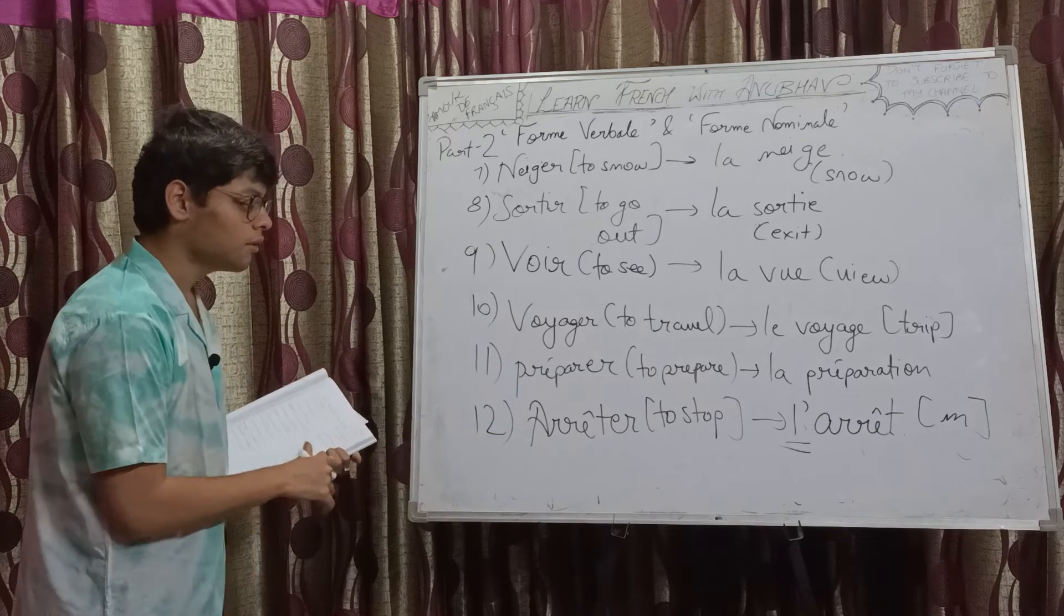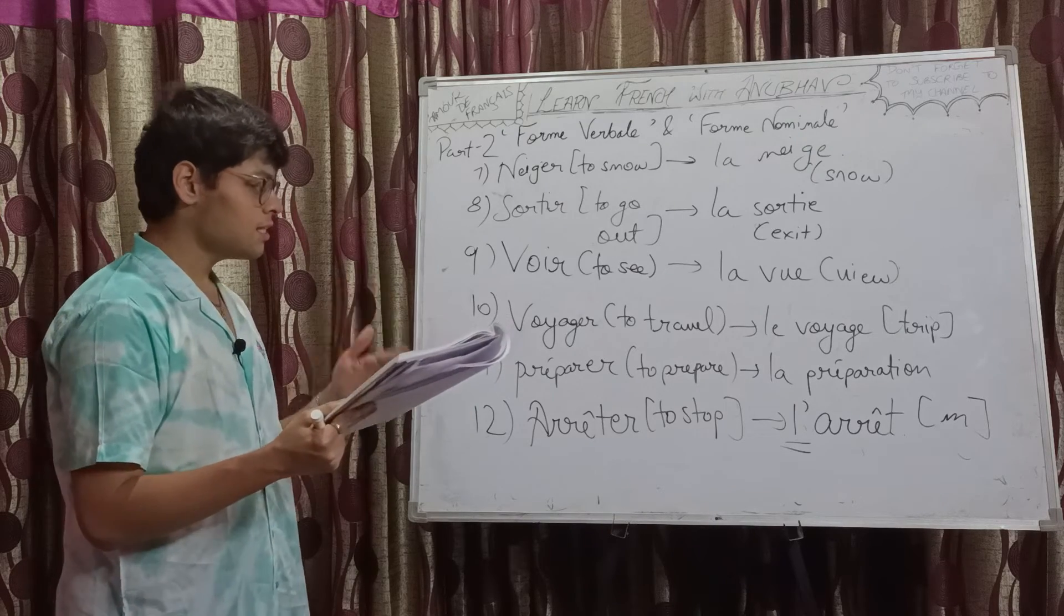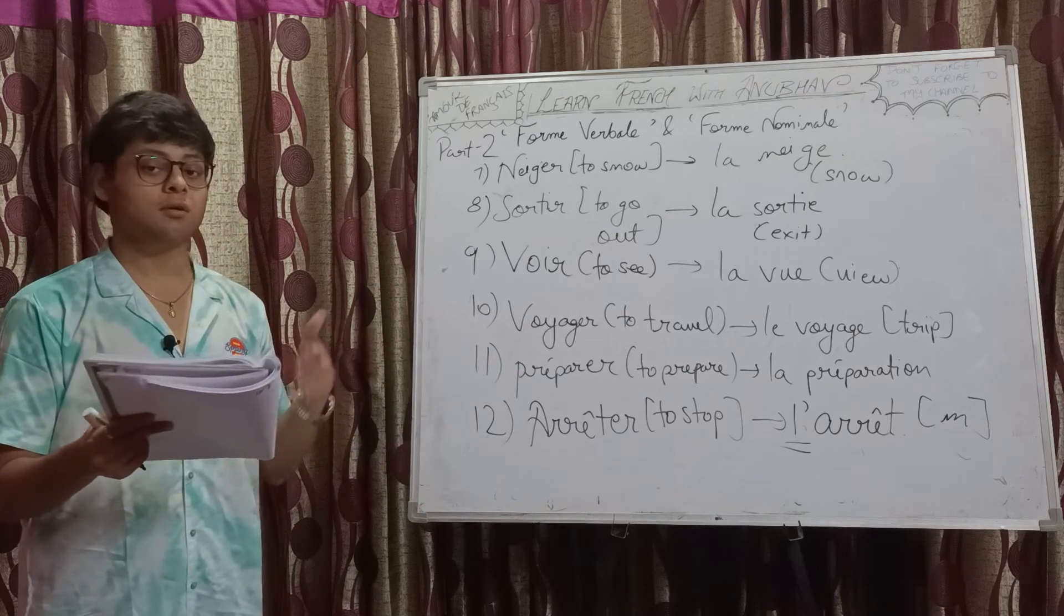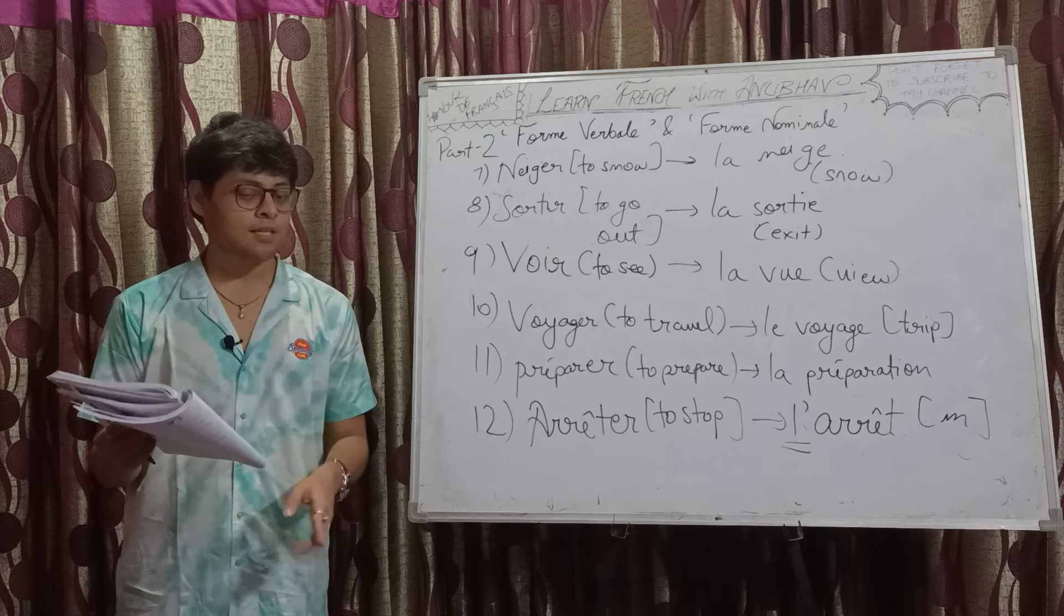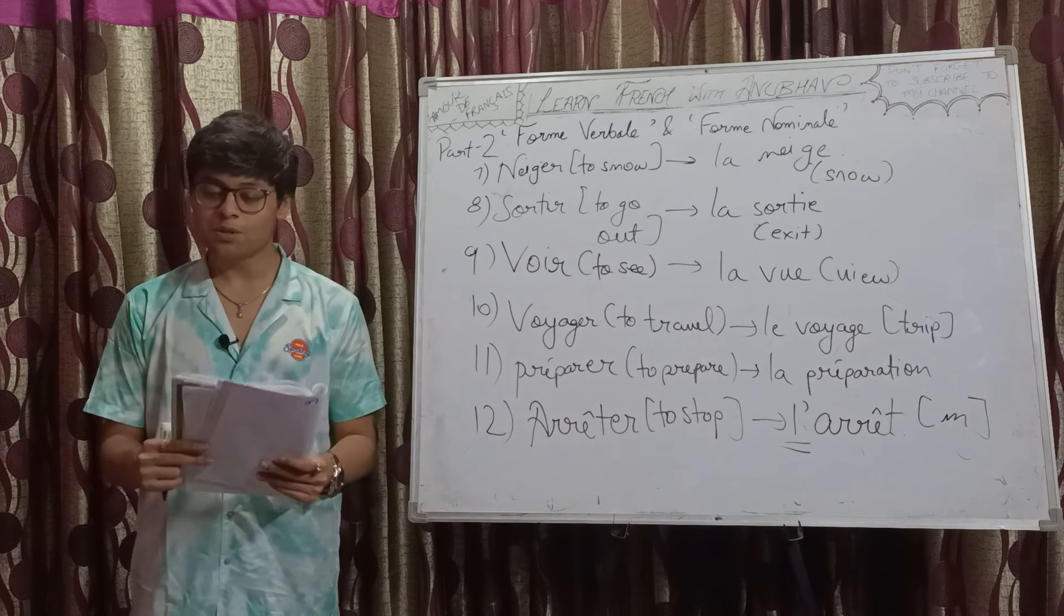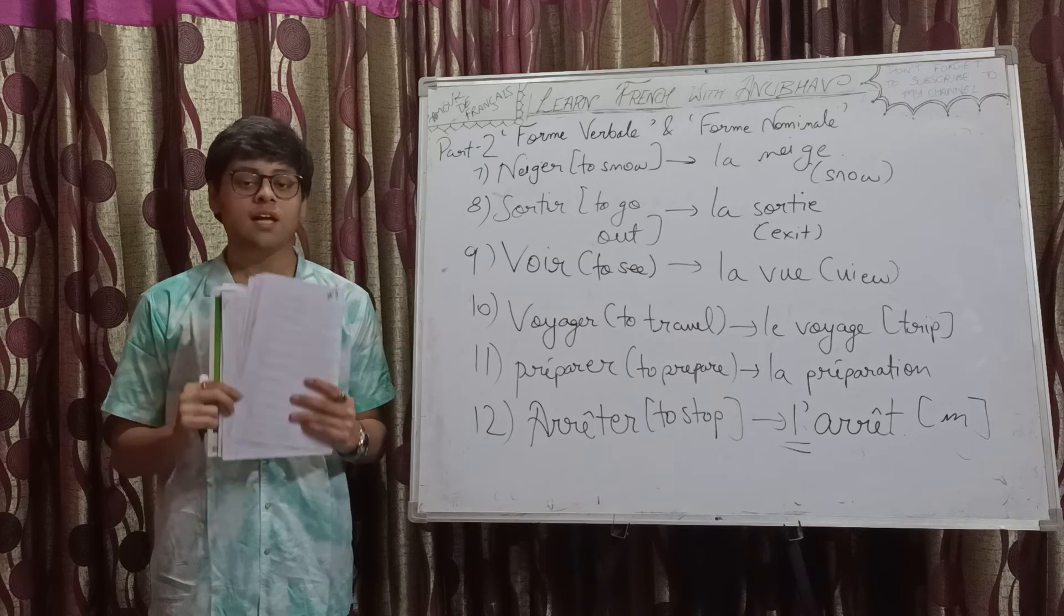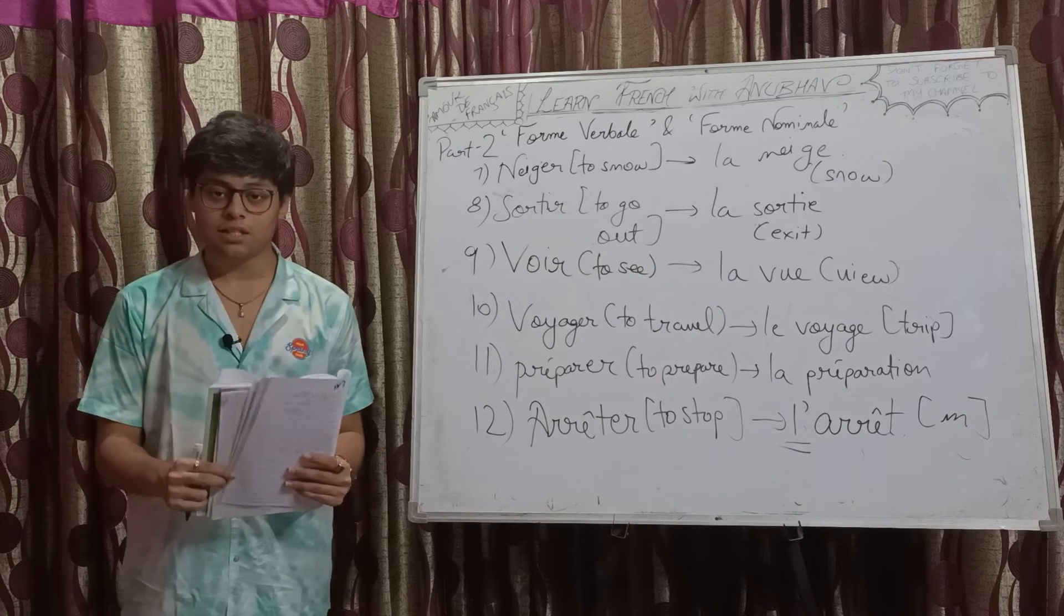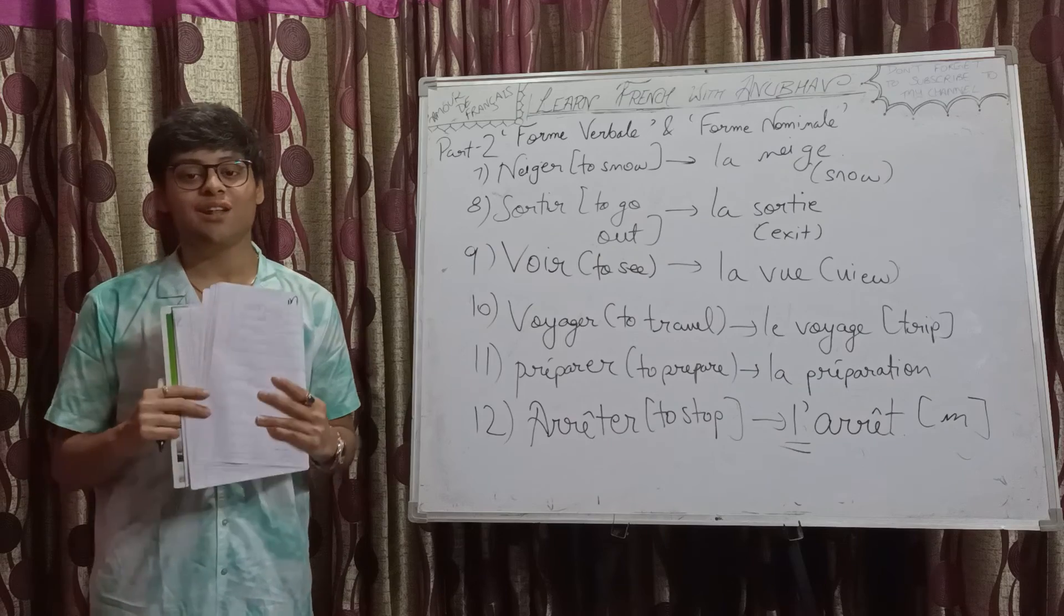With this, we have discussed another 12 verb forms and their corresponding noun forms. If you want Part 3, do let me know in the comments. That's all for today. If you liked this video, please give a thumbs up and subscribe to my YouTube channel. You may write any doubt or suggestion in the comment section below. Au revoir.